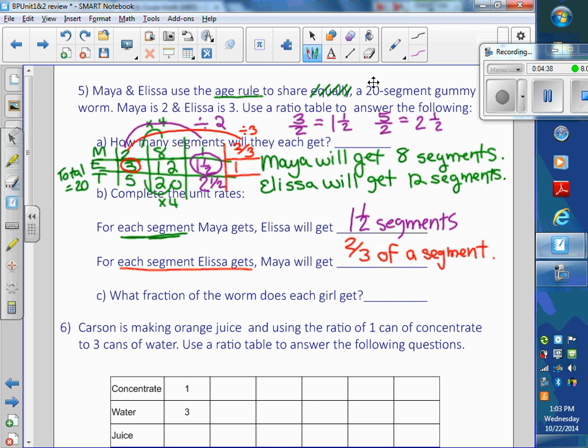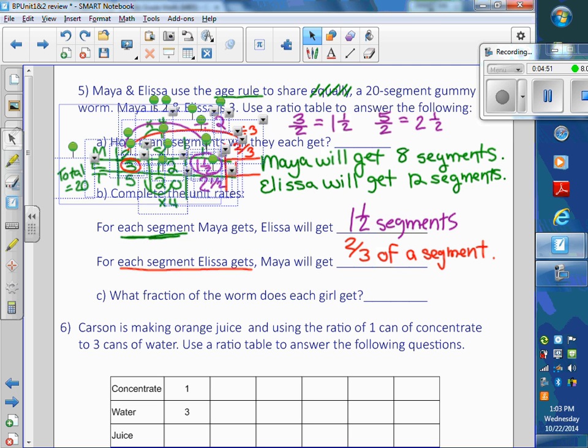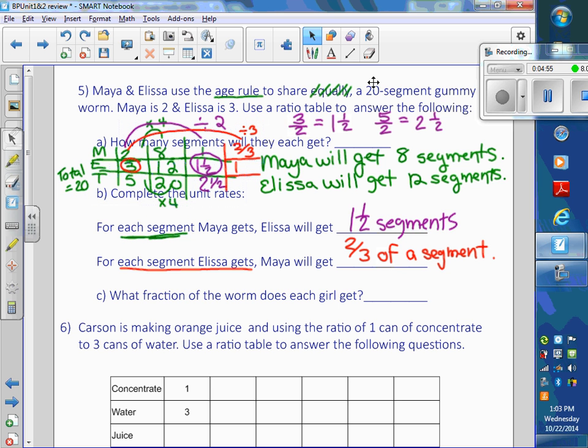What fraction of the worm will each girl get? So we have to get the worm down to 1. Okay? So the beauty of the smart board is I can stretch this, well, but you guys can't, so let me start again. Since I ran out of space here, I would just start again.